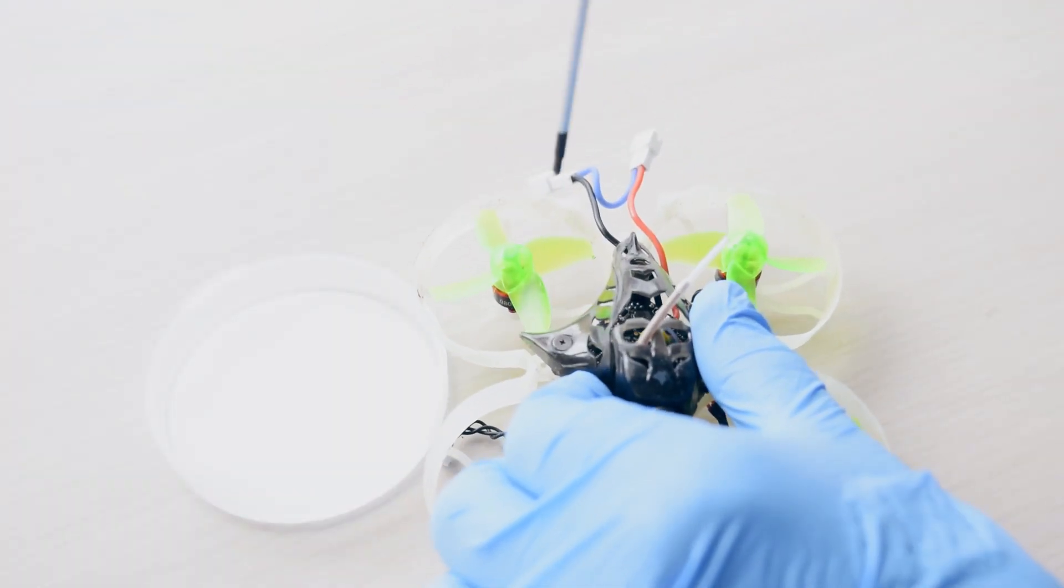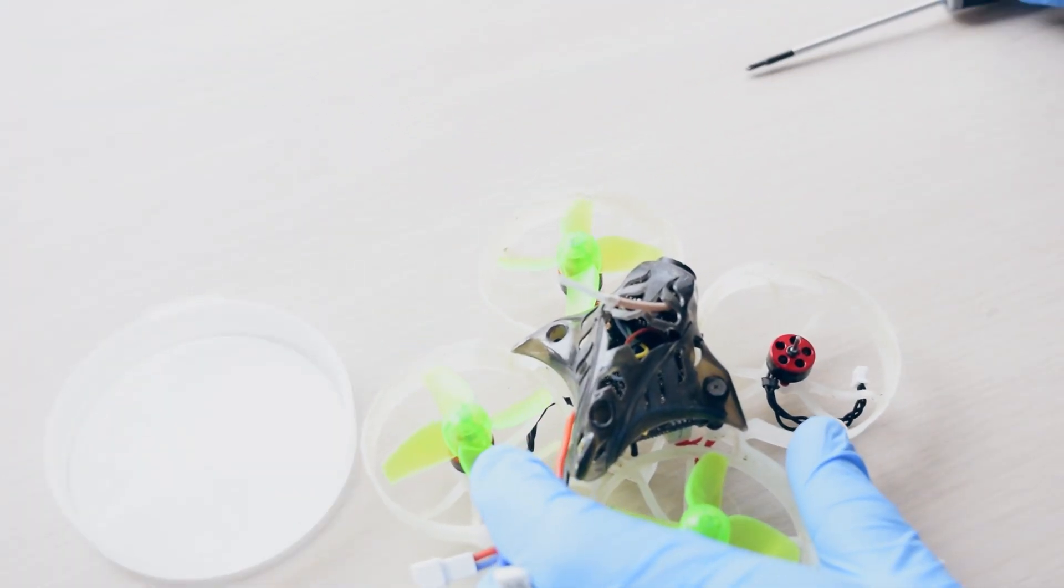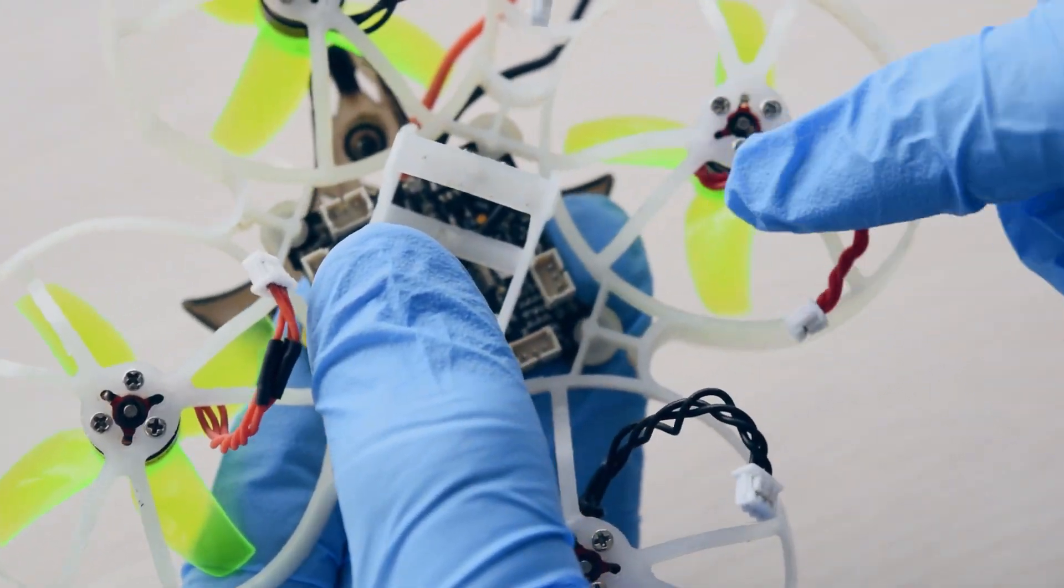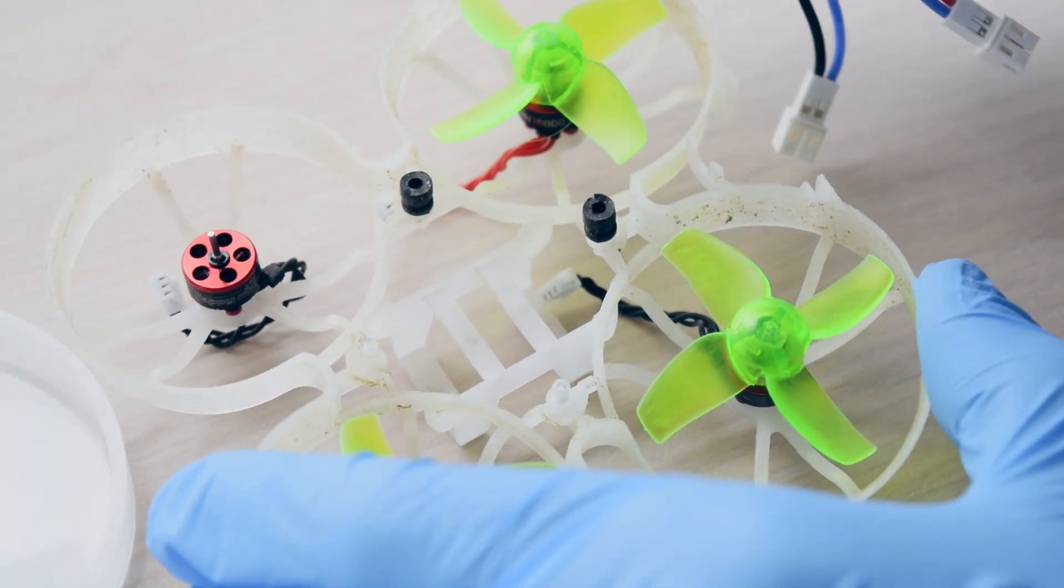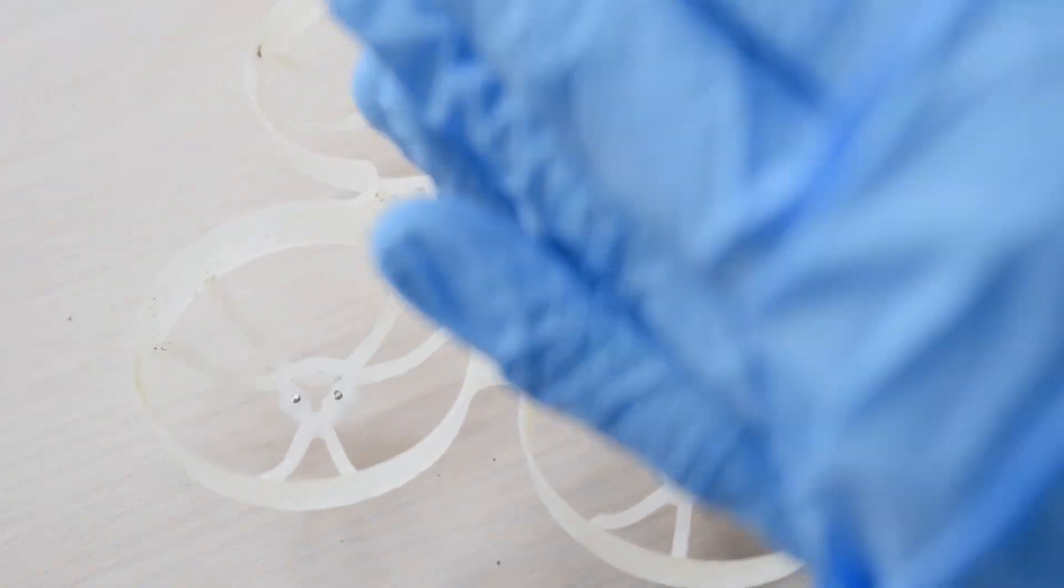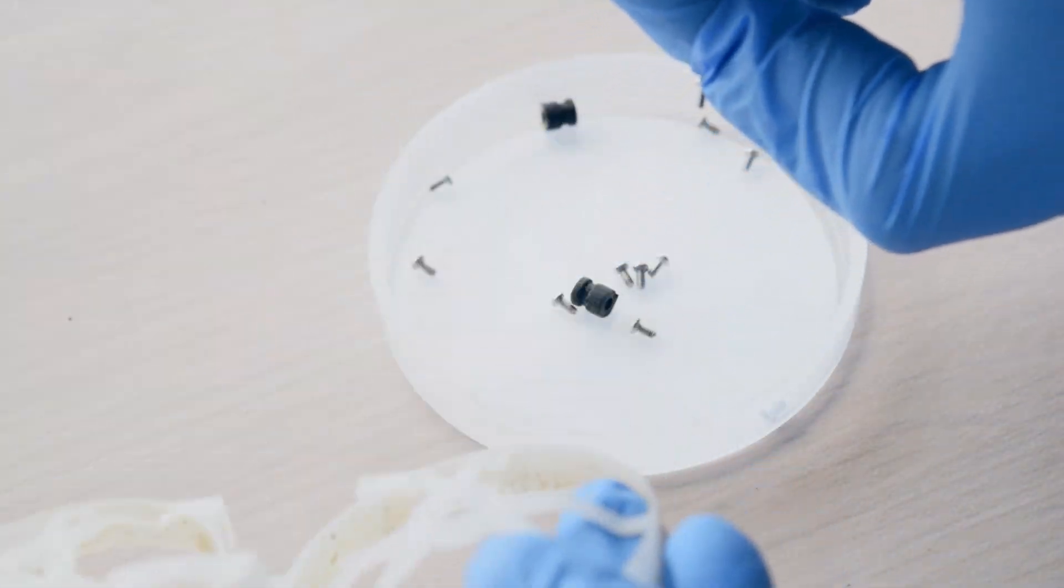I started by taking the camera canopy off with these three screws. Then I unclipped all four motors from their connections, which allows us to remove the flight controller and camera. Next, I unscrewed the motors so that I could remove them as well. I also made sure to keep all of the screws because I'll be needing them later.